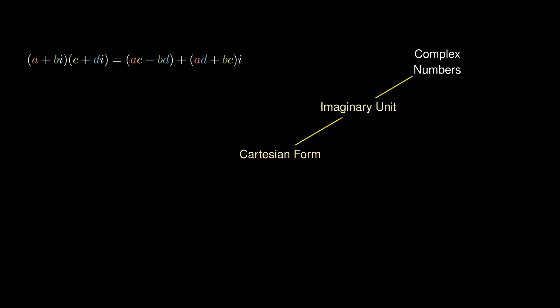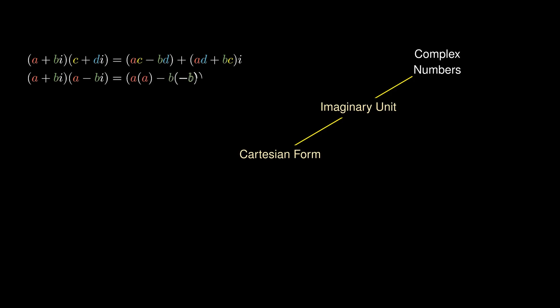One special case is a + bi times a - bi. Applying the complex number multiplication formula and cleaning up with a bit of algebra, we obtain a² + b². Knowing this calculation is surprisingly useful in helping us calculate division of complex numbers.